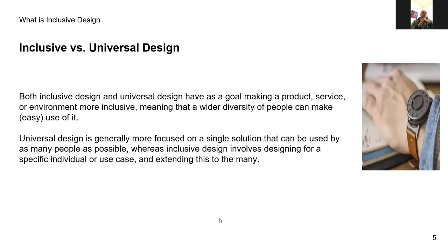You might have heard of universal design. Both universal design and inclusive design want to provide ways for everyone to participate. The difference is that universal design usually has one design they hope will serve as many people as possible. Whereas inclusive design looks at who might be excluded from the design, comes up with a solution for those people, and then applies it to others to benefit everyone.